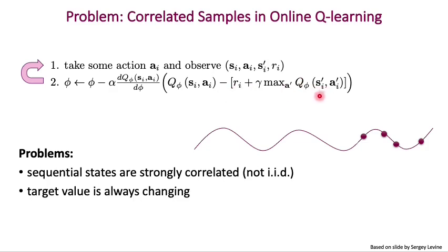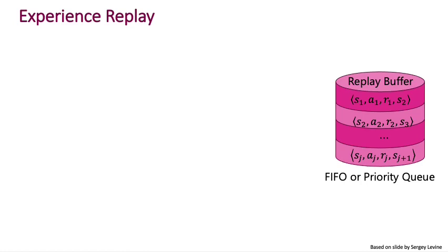Let's first deal with the sequential states being strongly correlated. To deal with this correlation issue, remember what we said earlier about Q-learning being an off-policy algorithm, which means that the actions and states that you are basing your updates on don't have to be drawn from any one particular policy. You can actually use any policy to act in the world. And so that means that we actually don't have to use only the most recent states and actions. We could instead just be using states and actions from a policy that we were deploying many iterations ago.